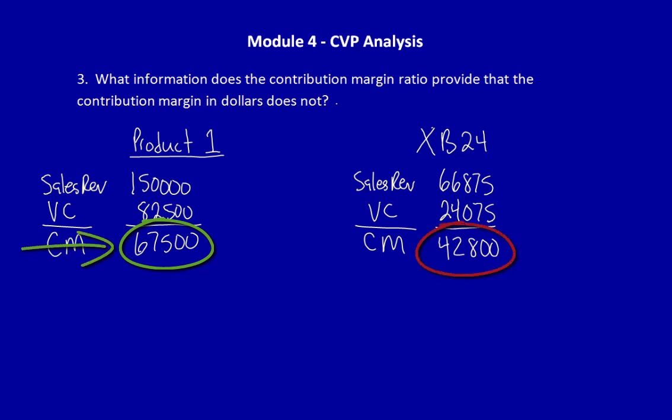Therefore, we're getting more money in our pocket through Product 1 than we are through XB24. If we have to decide between the two products, it seems very clear that we're going to choose to continue to produce Product 1.